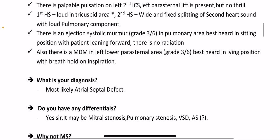First heart sound is loud in the tricuspid area. Second heart sound shows wide and fixed splitting with a loud pulmonary component. There is an ejection systolic murmur grade 3/6 in the pulmonary area, best heard in the sitting position with the patient leaning forward. There is no radiation.